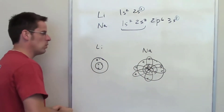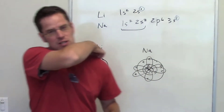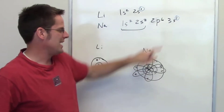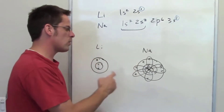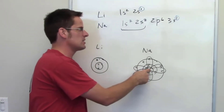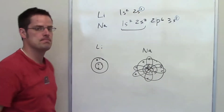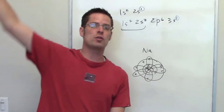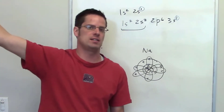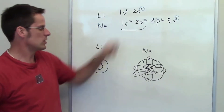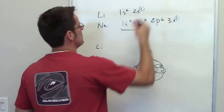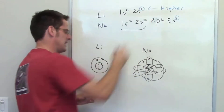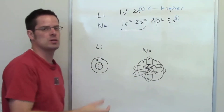Here's the point: sodium's electron out in the 3s orbital is much further away from the protons in the nucleus than the outermost electron in lithium. Because that electron is further away from those protons, it's easier to remove it. So lithium has a much higher first ionization energy because its single electron being removed is closer to those protons in the nucleus.